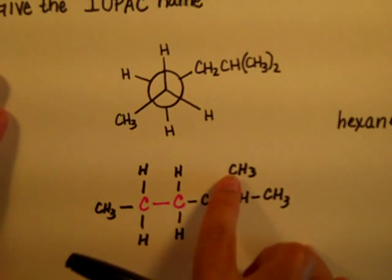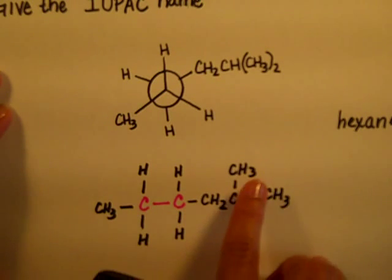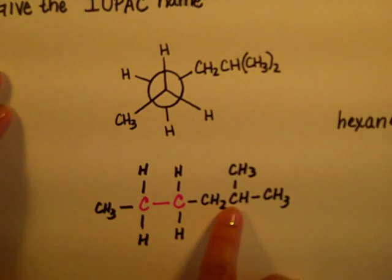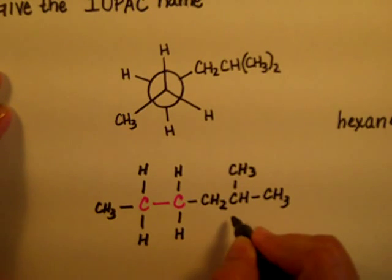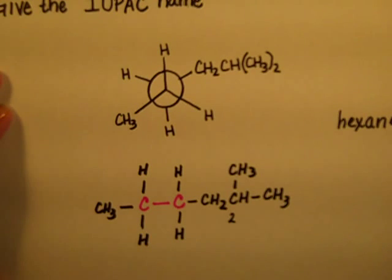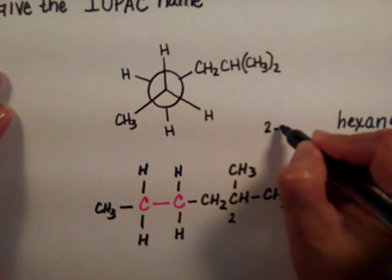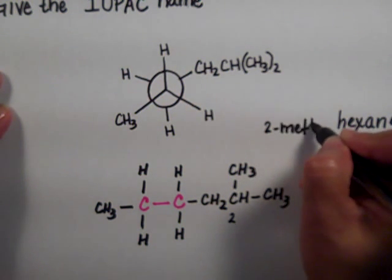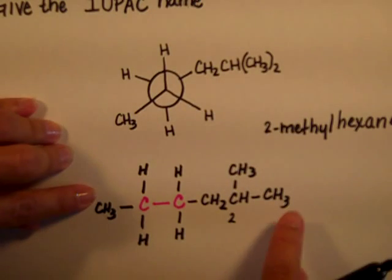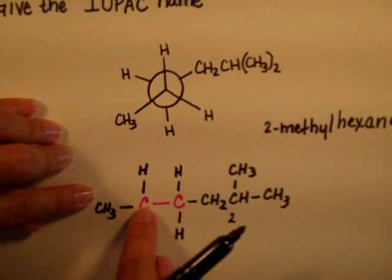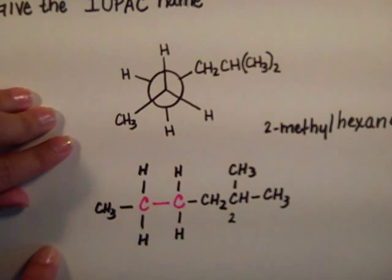Notice that I only have one methyl on my whole six-carbon chain. I'm going to give that methyl the lowest possible number, so I start numbering from the right side of this molecule — that carbon would be carbon number two. So this Newman projection is actually 2-methylhexane, and we're looking at it down carbons four and five to make this Newman projection.